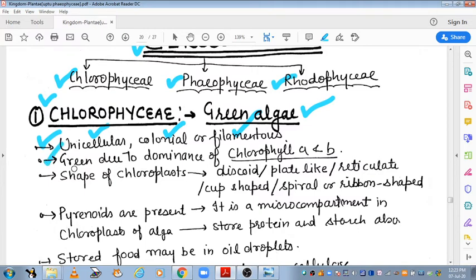They are green due to the dominance of chlorophyll a and b in the photosynthetic pigments. Chlorophyll a and b are the most present. Therefore, their color is green. That is the main reason behind the name of this class, Chlorophyceae.